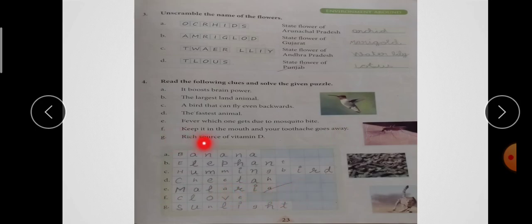और last है - Rich Source of Vitamin D. तो Vitamin D का जो rich source है, that is Sunlight. S-U-N-L-I-G-H-T, Sunlight.